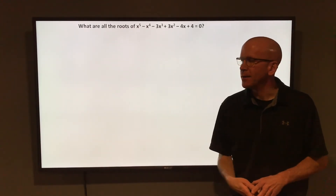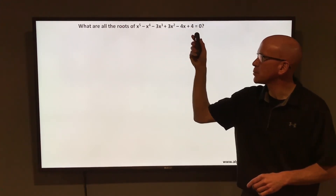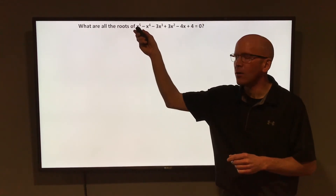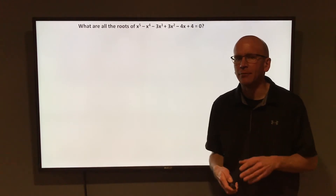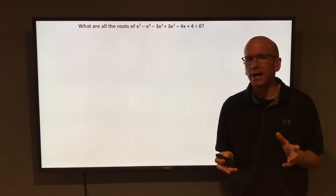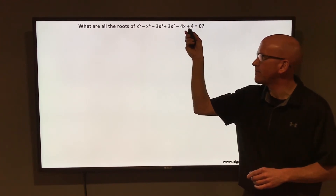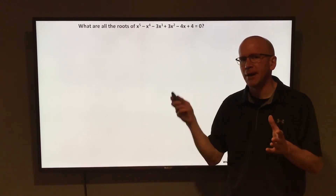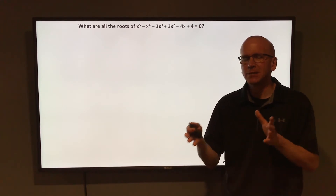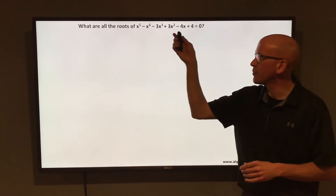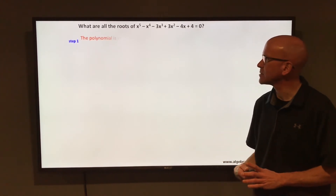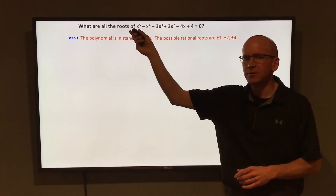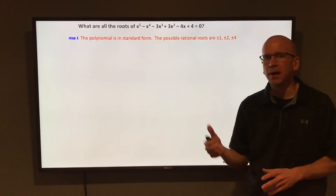We're going to find all the roots of x⁵ - x⁴ - 3x³ + 3x² - 4x + 4 = 0. By finding all the roots, that means finding all five roots since the degree is 5. First, find the possible rational roots: factors of the constant term (factors of 4) over factors of the leading coefficient (factors of 1). Since you're dividing by factors of 1, the possible rational roots are just ±1, ±2, and ±4.